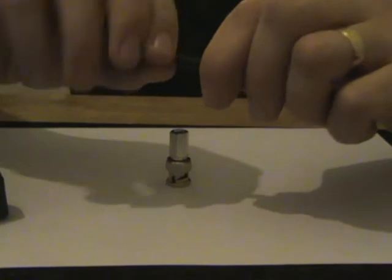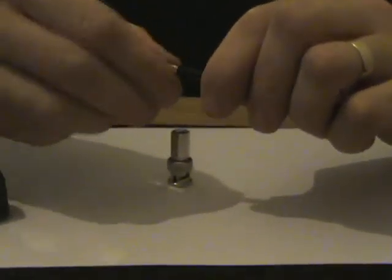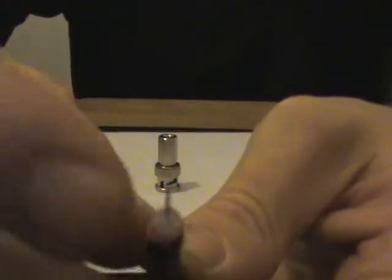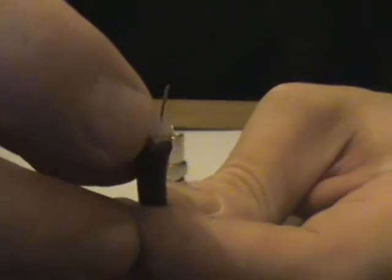If you move some of the outer braid out of the way, you just need to make sure that there's no conductors actually touching the center conductor there.